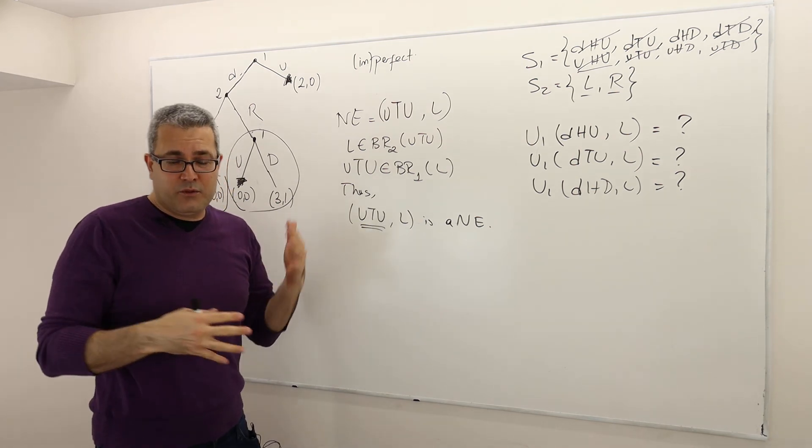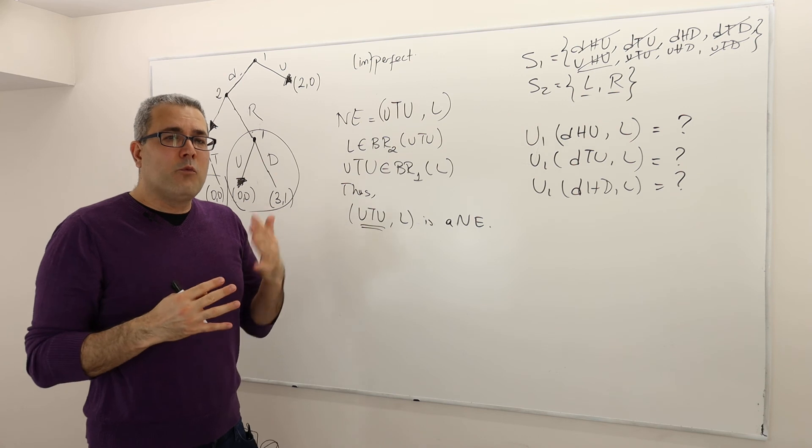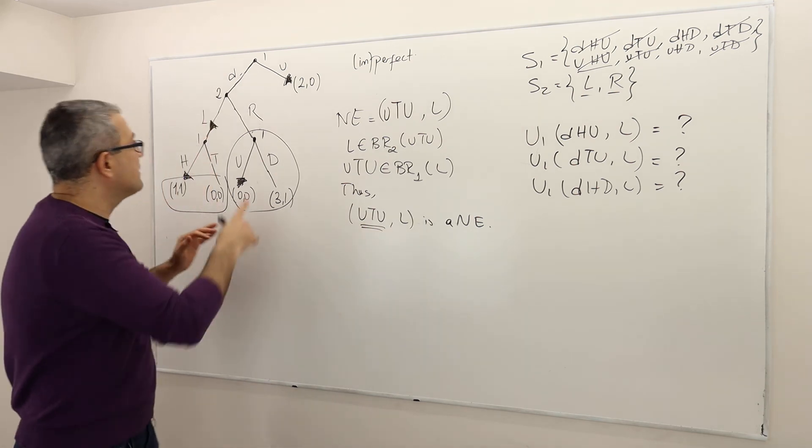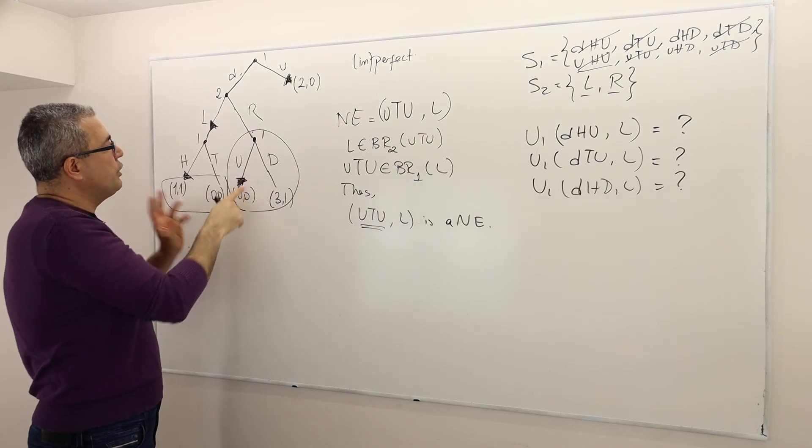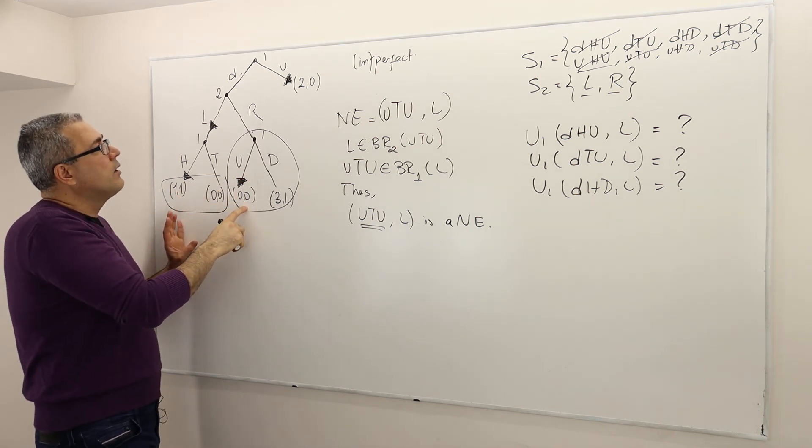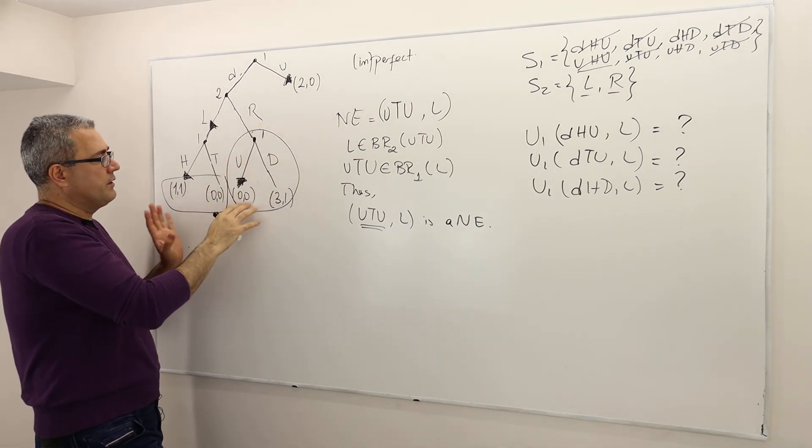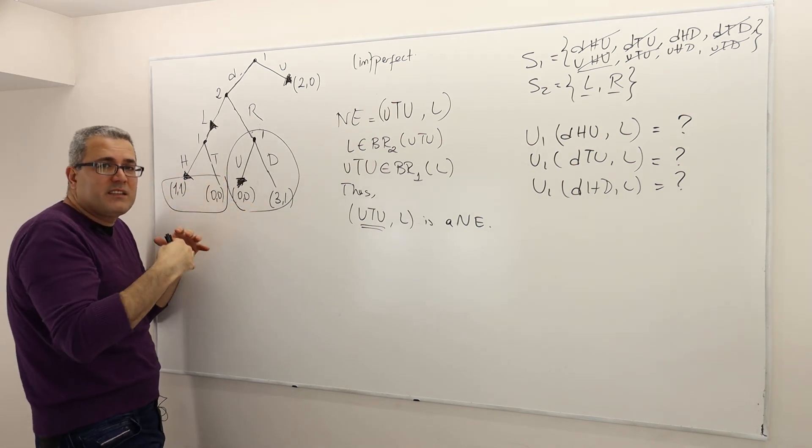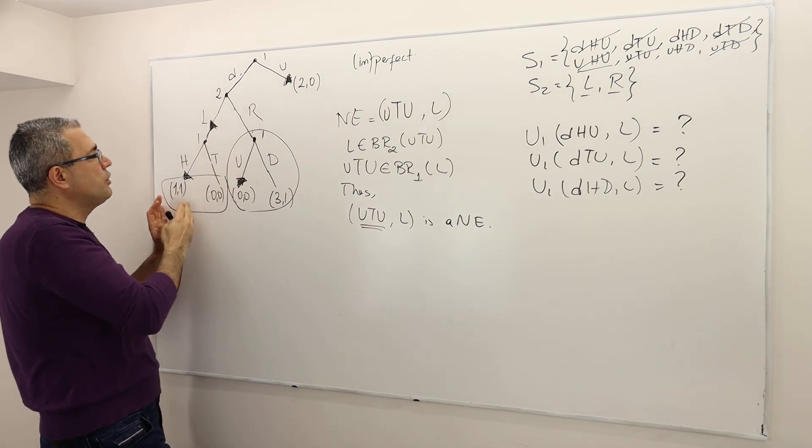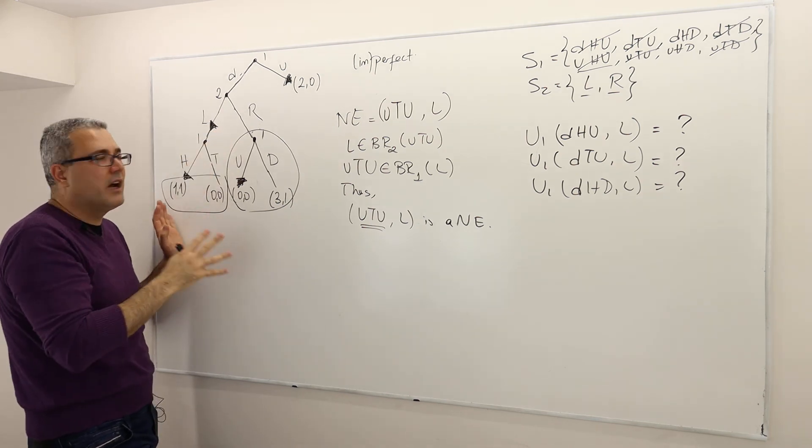Sometimes in an extensive form game, one player is threatening you. It's like, look, player one says, I'm going to play U, alright? And so do not play R because you're going to end up with zero. So by this threat, he is forcing the second guy to choose L, right?